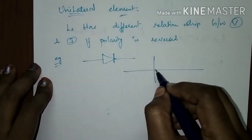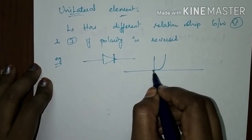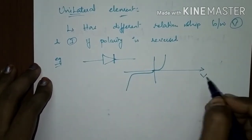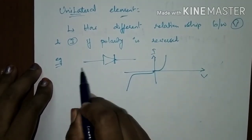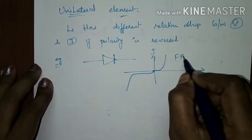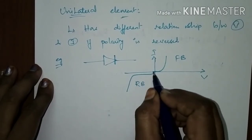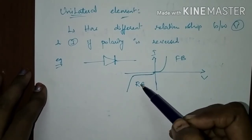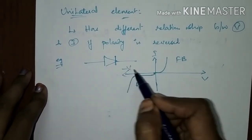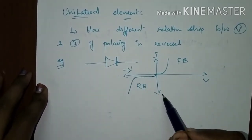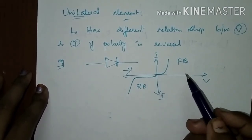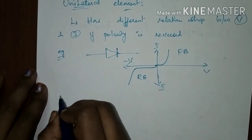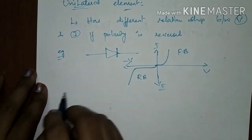The forward characteristics of a diode are not symmetrical with the reverse characteristics. This is the VI characteristic of a diode — it conducts during forward bias, but during reverse bias it does not conduct and only a minimal leakage current flows. So if you reverse the polarity of the voltage, the voltage and current relationship is not the same as before — therefore it is a unilateral element.